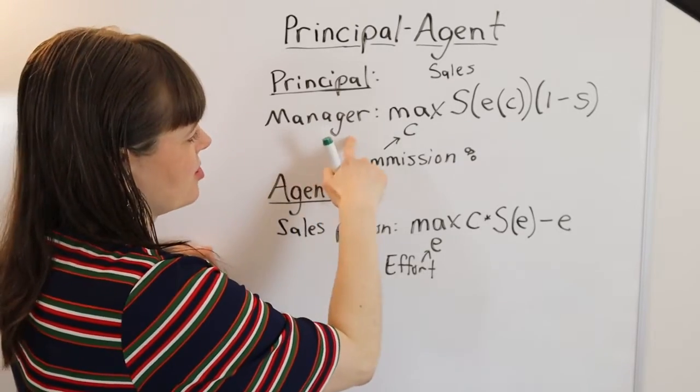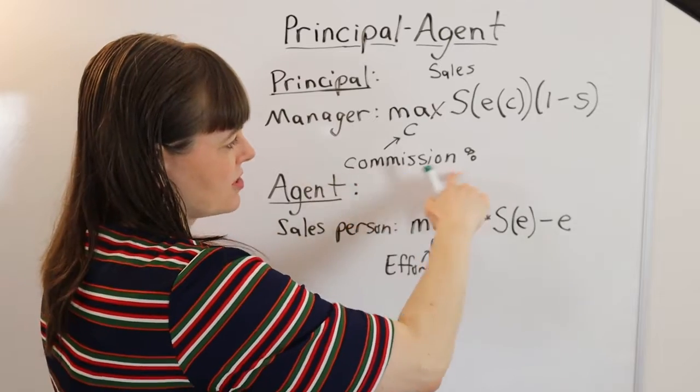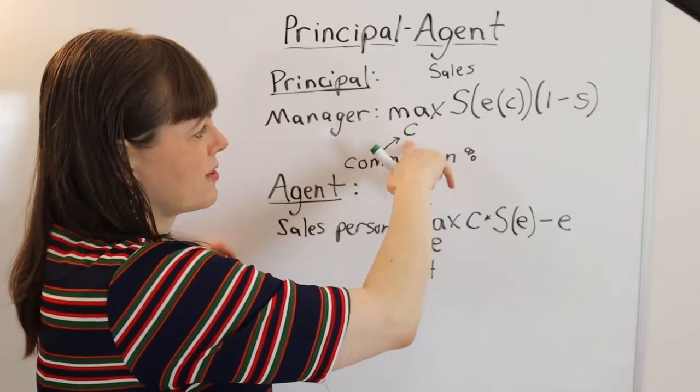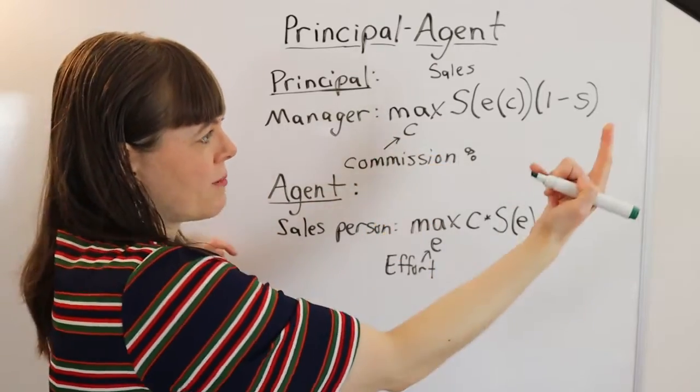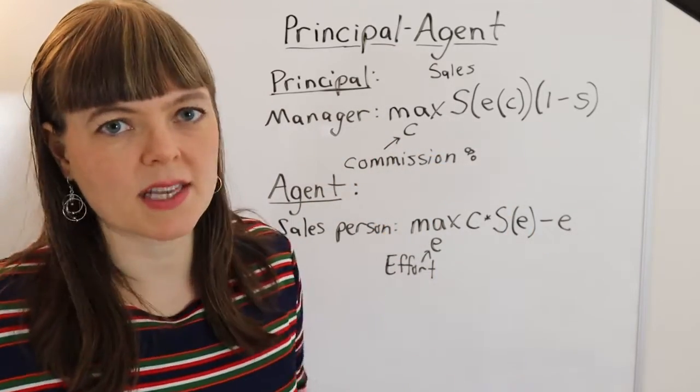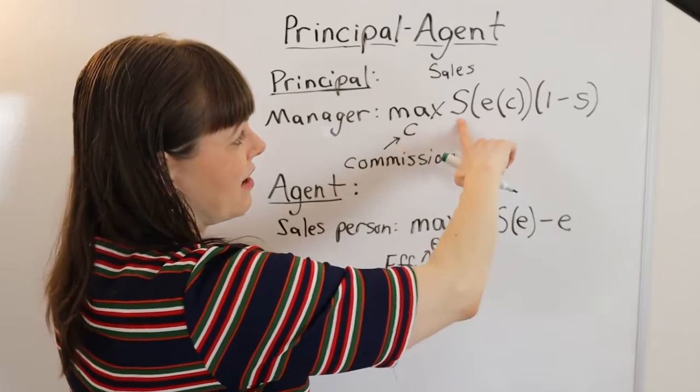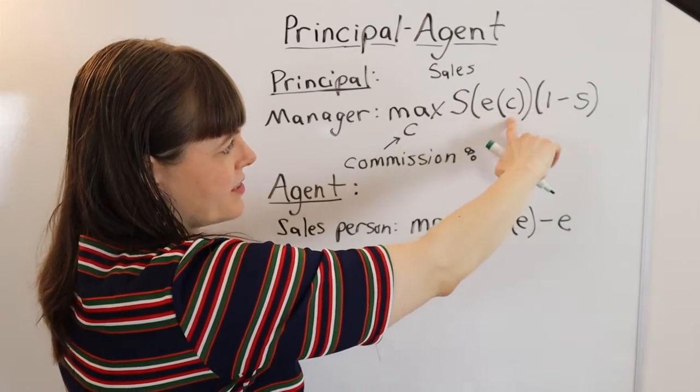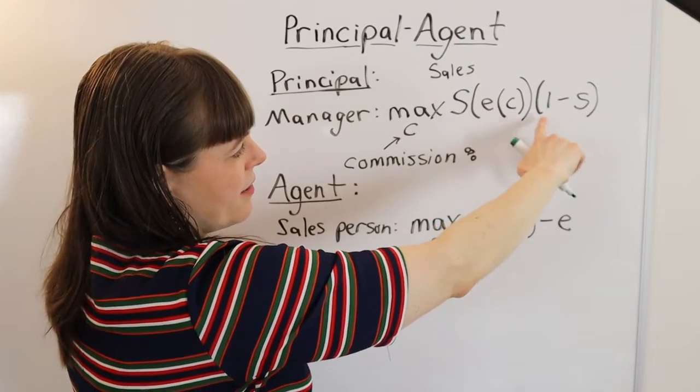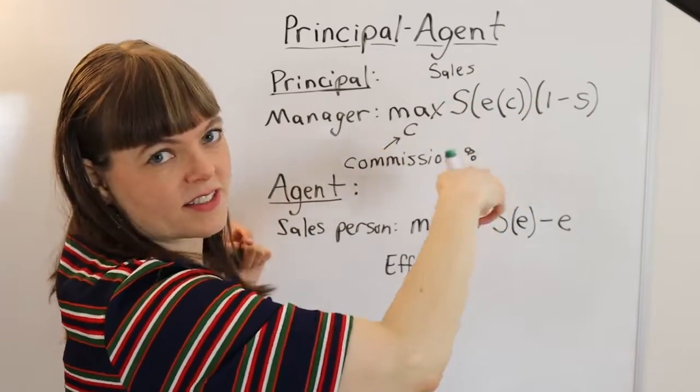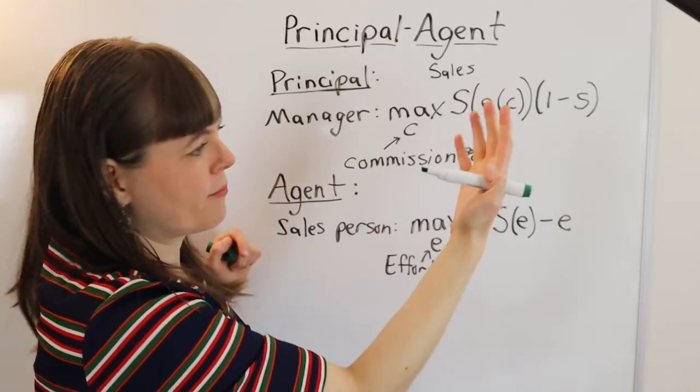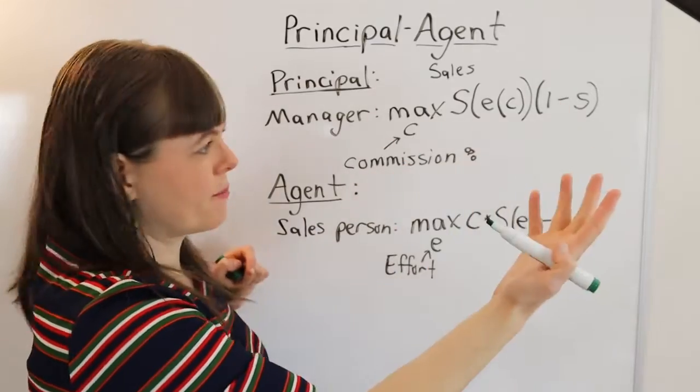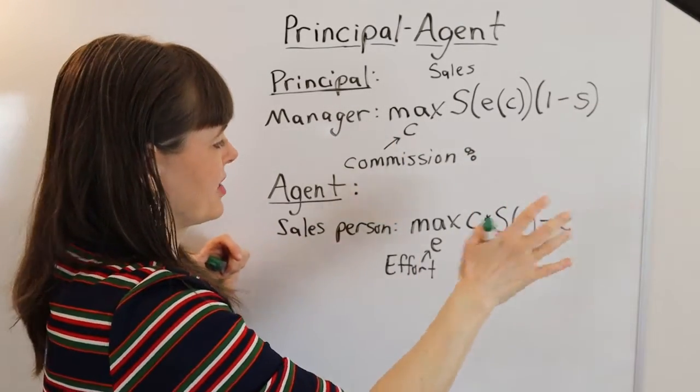So here we have a manager who is choosing what percentage should the salesperson get in commission? And of course, this is the principal's choice variable, commission. What are they maximizing? Well, they're maximizing company profit, which is sales, as a function of the effort that the salesperson puts in, as a function of commission. And of course, what percentage of the sales does the manager or the company get to retain? It's one minus S, that's the percentage of the sales that they keep. That's their profit maximization model.